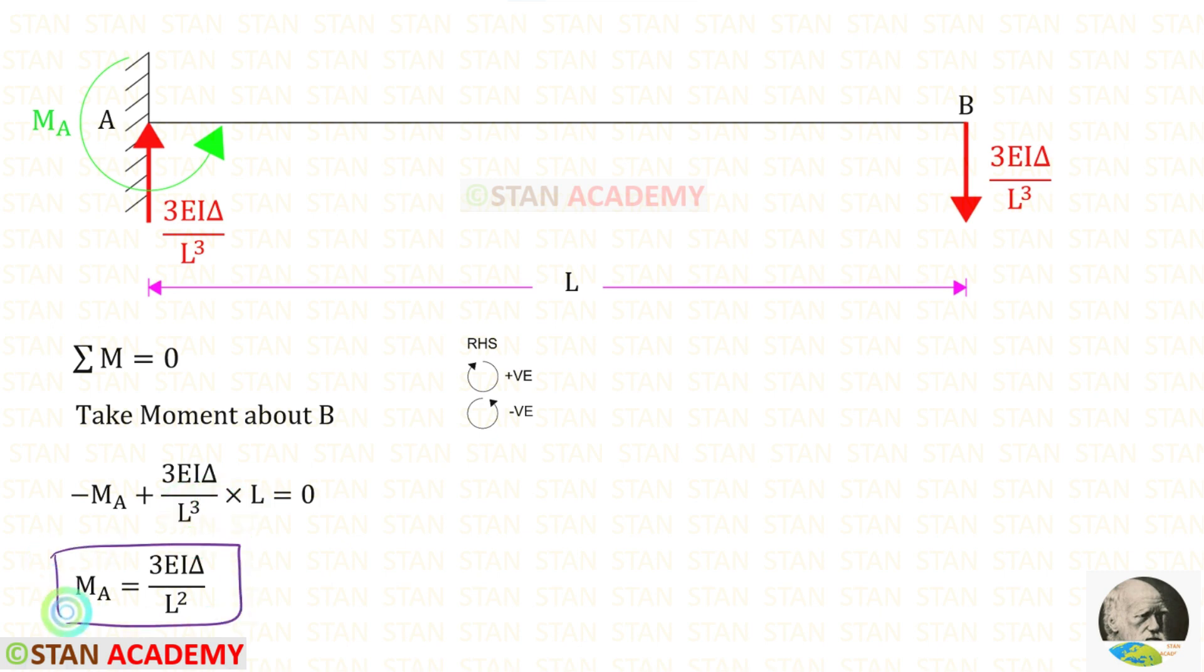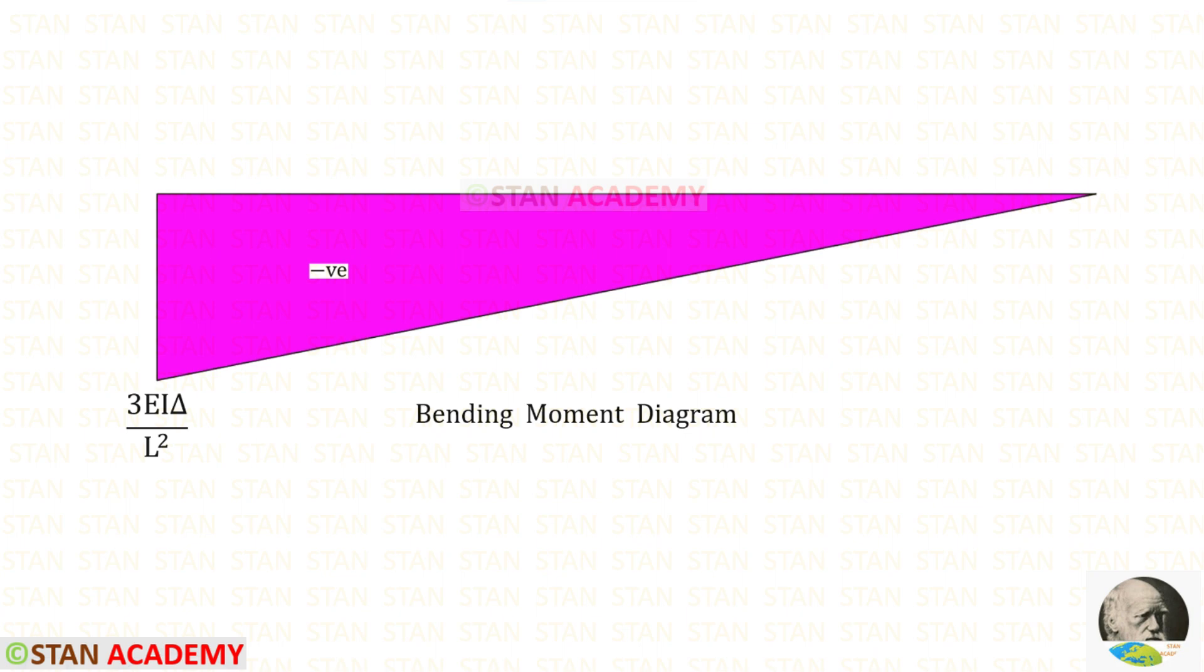In this way for ma we will get 3 ei delta upon l square. We have got a positive value, which means our assumption is correct. Ma is acting in the anticlockwise direction. Here you can see the bending moment diagram.